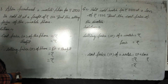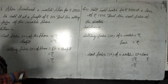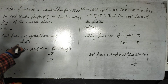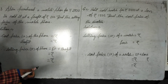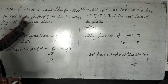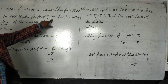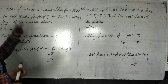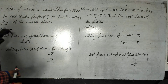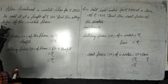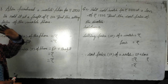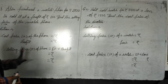So Ali ne 2500 rupees ki mobile phone khaari di. Jisse ki 200 rupees ki profit se usne sell kari di. Aapko kya find karna hai? Uski selling price — mobile ki selling price find karni hai.